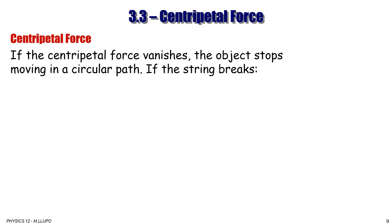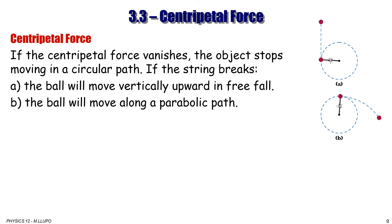What happens to an object undergoing circular motion if the force responsible for keeping it in that circular path vanishes? If you have a ball undergoing circular motion and the string breaks, the outcome depends on the position of the ball at the moment the string breaks. If the ball is at position A, it will go straight up, tangent to the circle. If the string breaks at point B, it will again move tangentially to the circle, but gravity will cause the ball to follow a parabolic path.